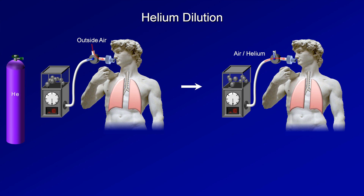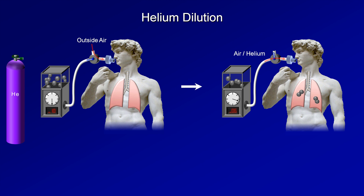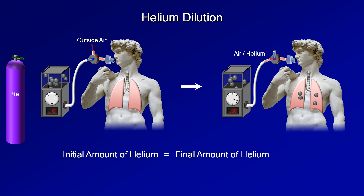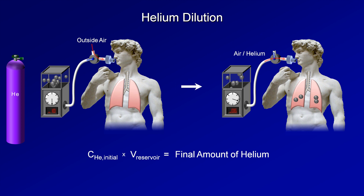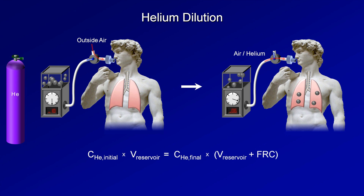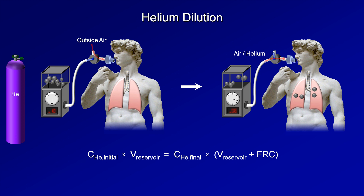With each breath, helium moves out of the reservoir and into the lungs until an equilibrium is reached and the helium concentration in the reservoir levels off. Since we are dealing with a closed system, and since helium is not absorbed across the alveolar capillary membrane, the initial amount of helium at the beginning must equal the final amount of helium at the end. The initial amount is equal to the initial concentration of helium times the volume of the reservoir, including the connecting tubing. The final amount is equal to the final concentration times the total volume over which the helium is distributed, which is the volume of the reservoir plus the functional residual capacity, assuming that the final concentration is measured with the patient at his or her FRC.